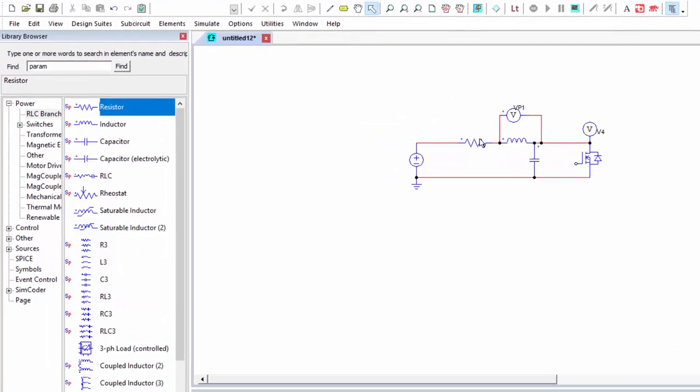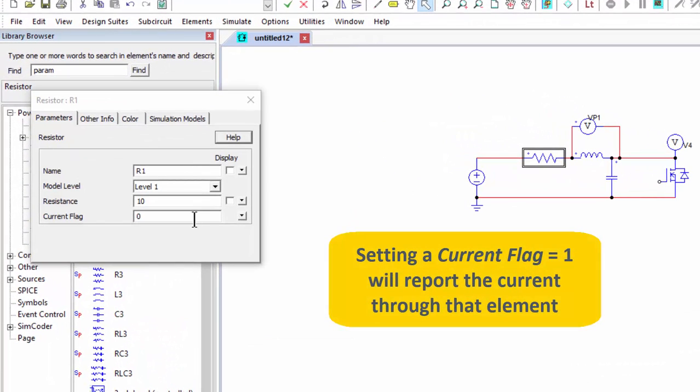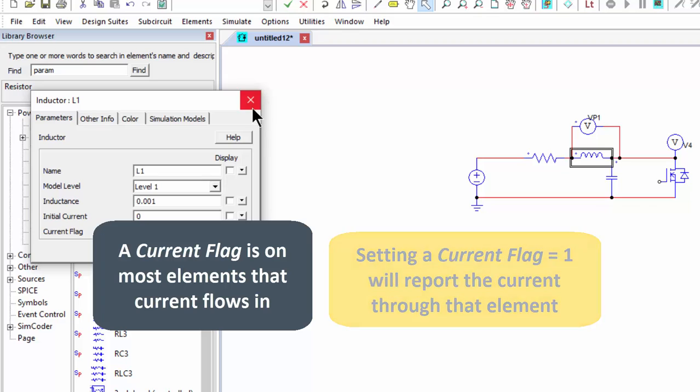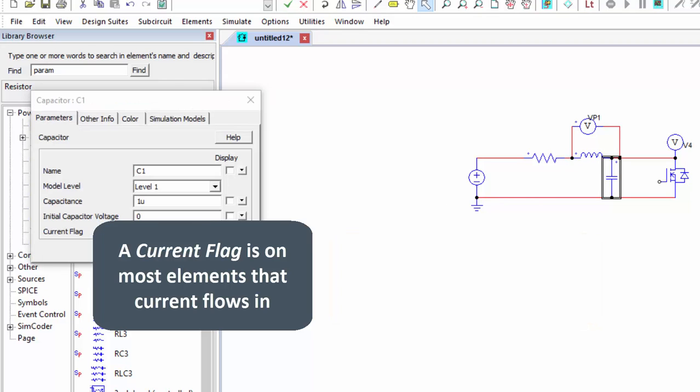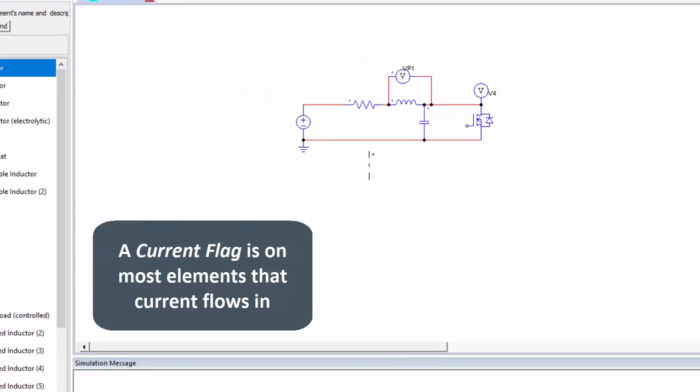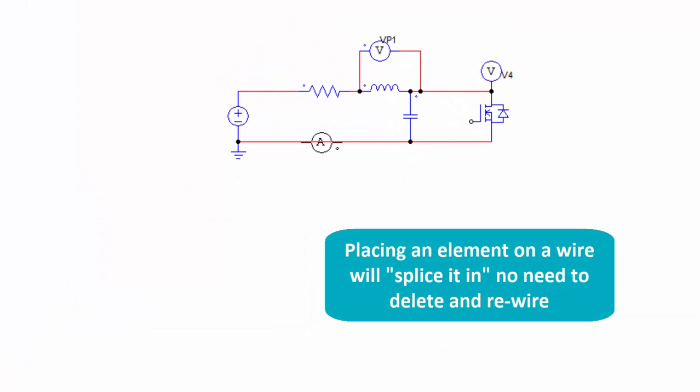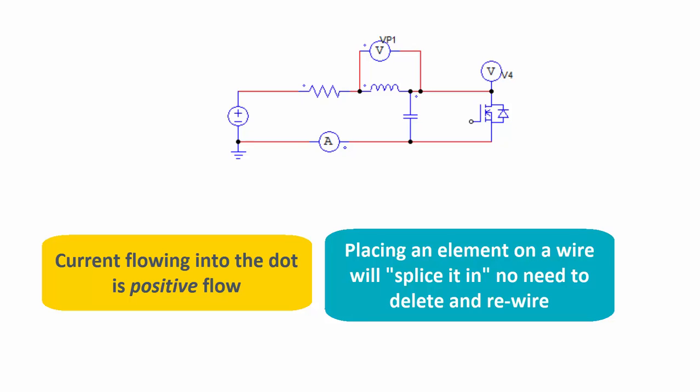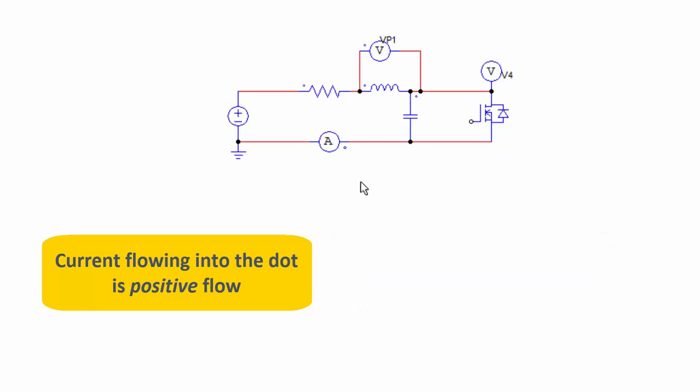And then we can also toggle inside of these elements this current flag. If we put that to one, we'll measure the current flowing through these elements. So we can put that to one, so this is available on most elements. And we can also place this ammeter on the return path here. If we just drop an element onto a trace, it will splice that in for us automatically.